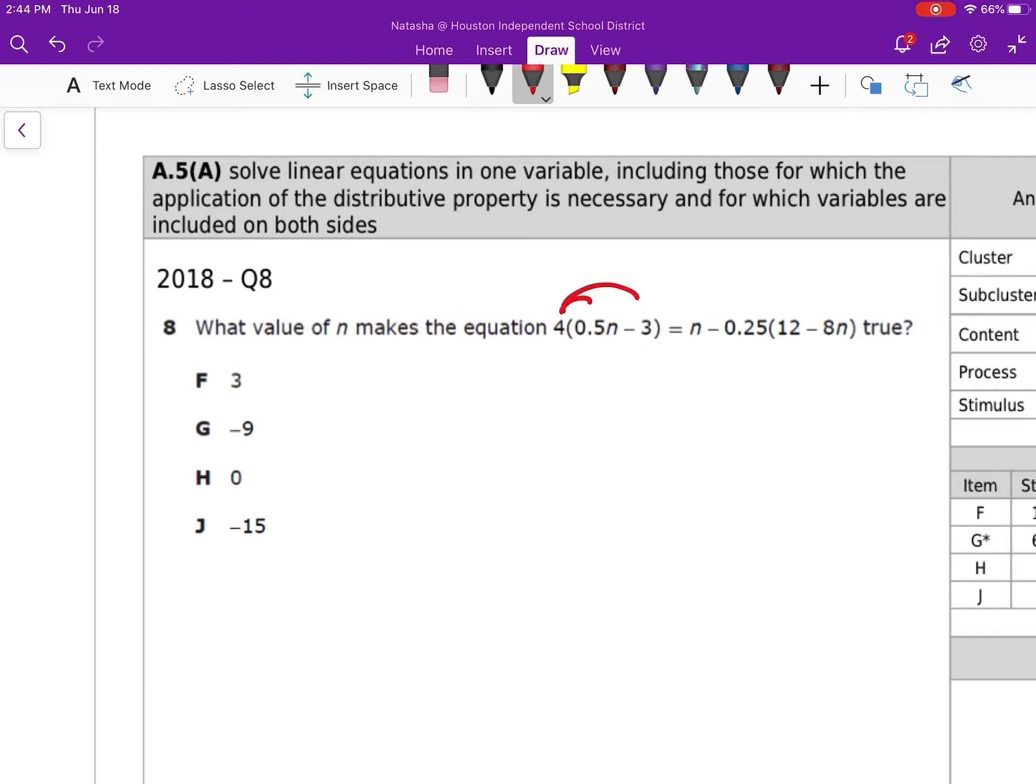I'm going to distribute. So 4 times 0.5 gives me 2N minus 12. That's going to be N. Distribute that. 0.25 times 12 gives me minus 3. And then plus 2N combined like terms. That becomes 3N minus 3 equals negative 12, 2N.